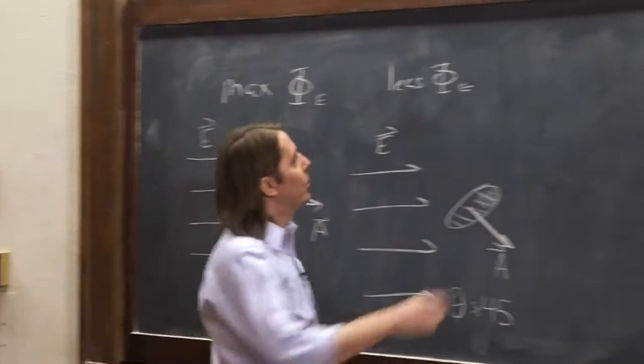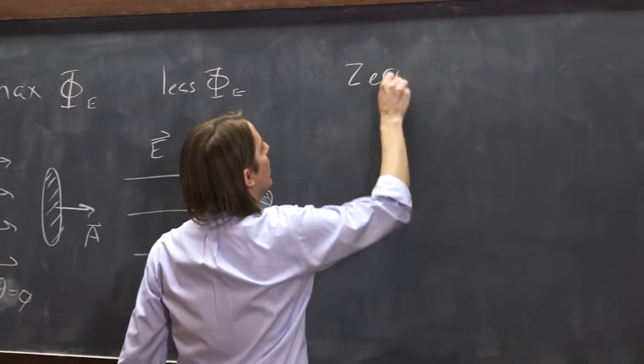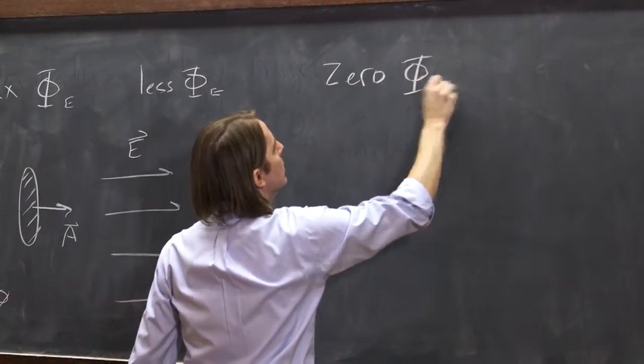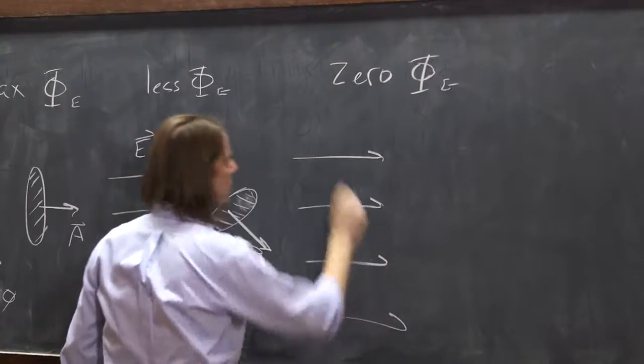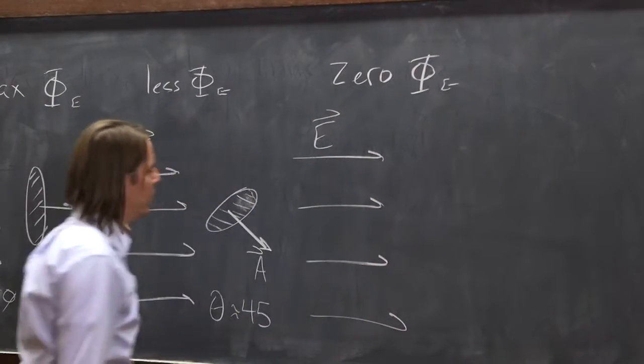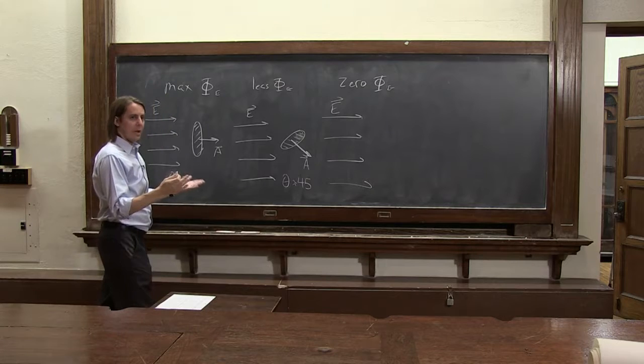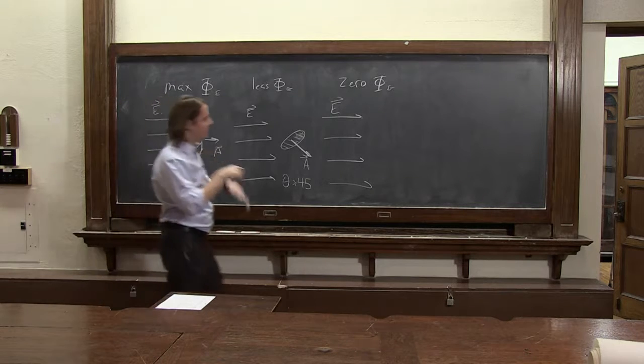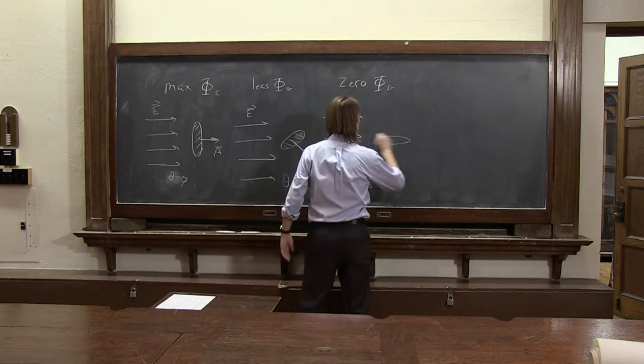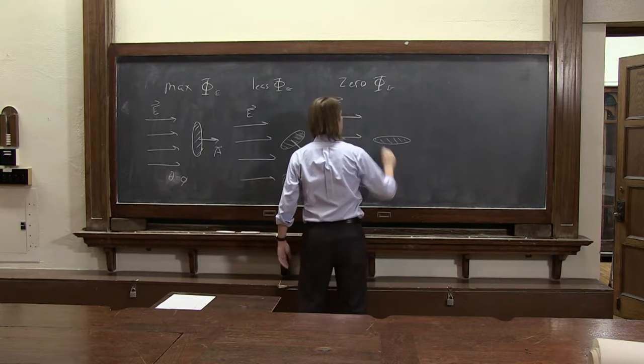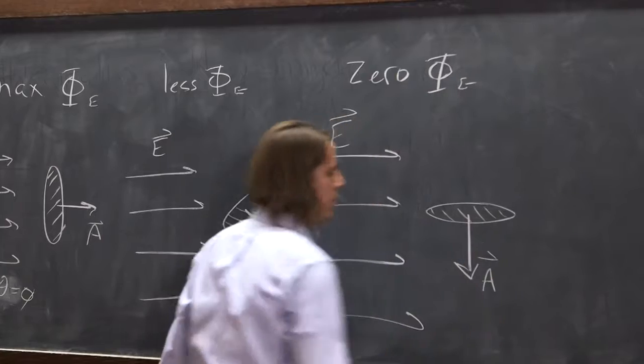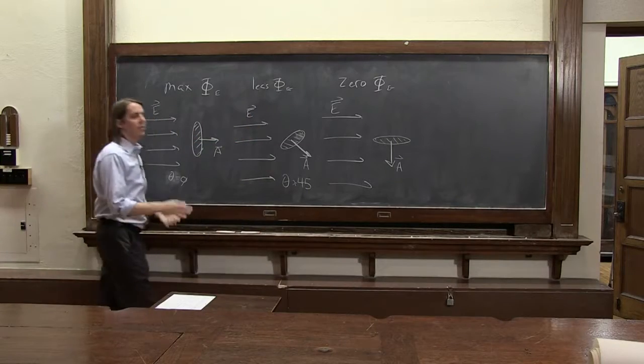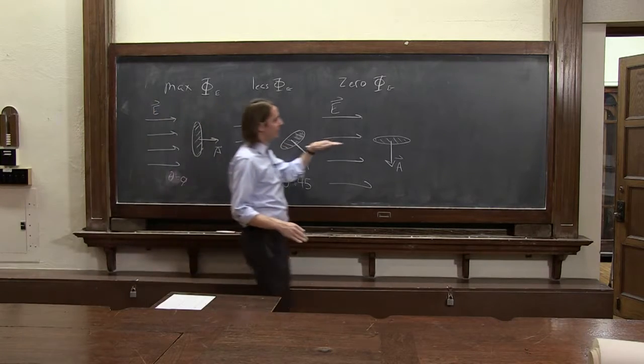You can also get 0. E field, constant E field. What would you do? The area of the circle is just flat. If your area looked like that and your A vector were down, then nothing gets through. The field vectors don't even see the area.